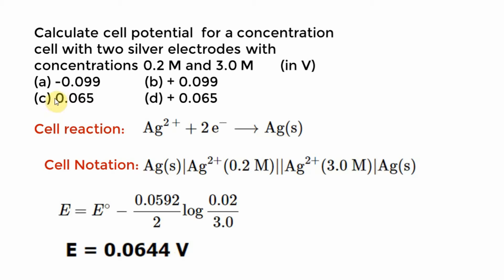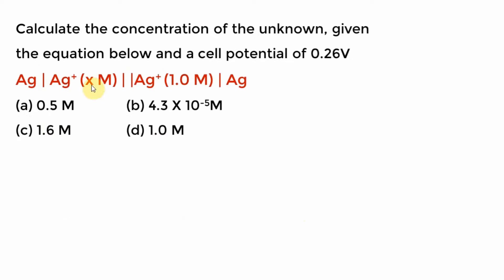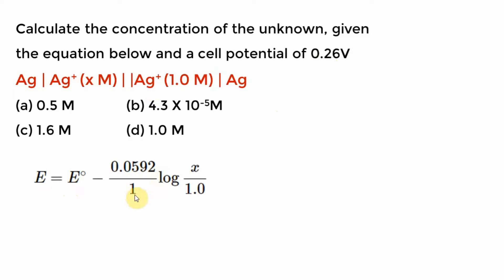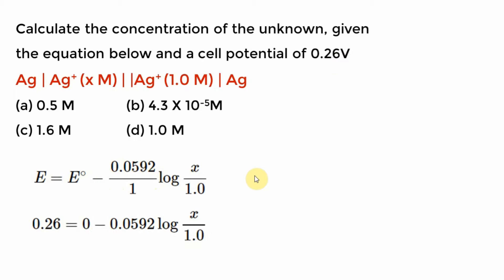In the particular problem the minus sign was missing — if the minus sign was missing that is not the correct option. The correct option is D. Calculate the concentration of the unknown: it is a concentration cell where they give you E_cell and ask for concentration. N = 1 (silver). Log(x/1) where x is unknown. E° = 0, so take the negative to the other side and divide by 0.0591. With 0.26/0.05 you can calculate x.